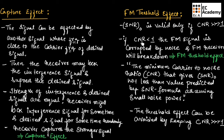This effect is known as FM threshold effect. To avoid noise in the FM signal, the carrier-to-noise ratio should be greater than 1. We can define the FM threshold effect as the minimum carrier-to-noise ratio that gives a signal-to-noise ratio of output not less than the value predicted by the signal-to-noise ratio formula, assuming small noise power. This is the definition for FM threshold effect, and this threshold effect can be avoided by keeping the carrier-to-noise ratio very much greater than 1.